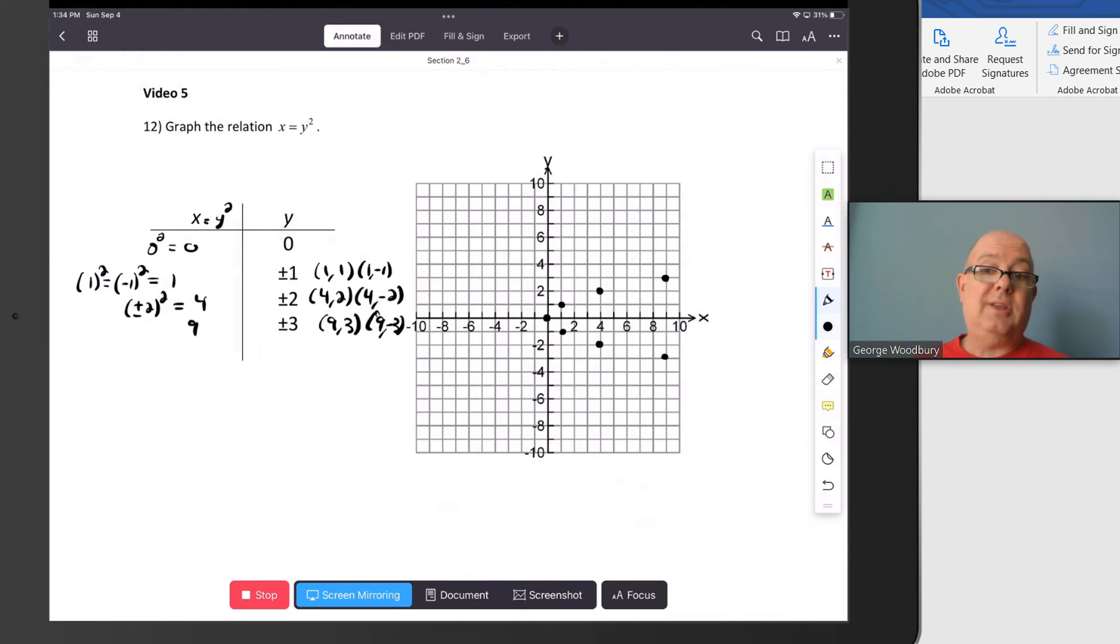It looks like the x squared function, except it's going to the right instead of up. So something like this. Again, make sure it's rounded at that turning point.